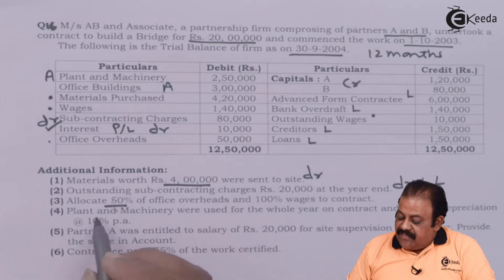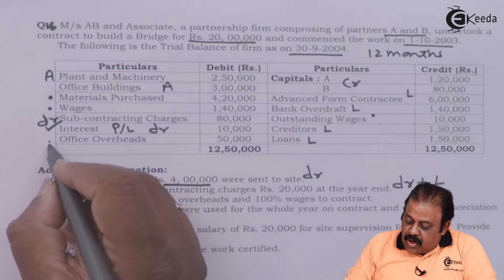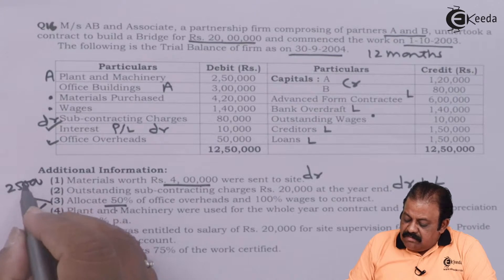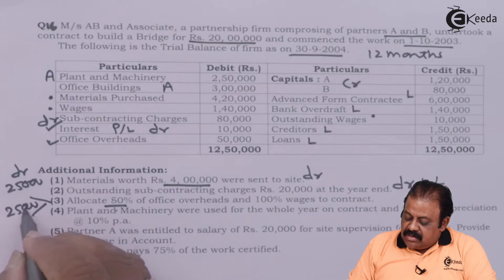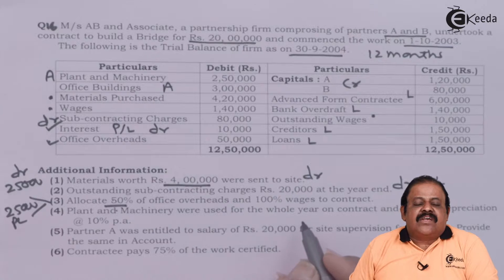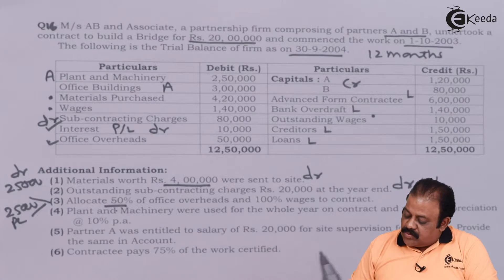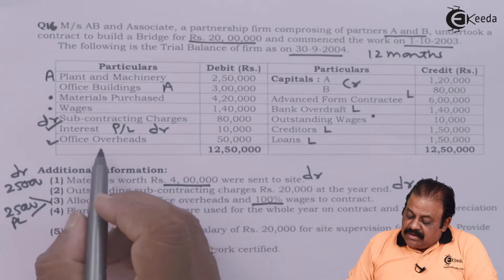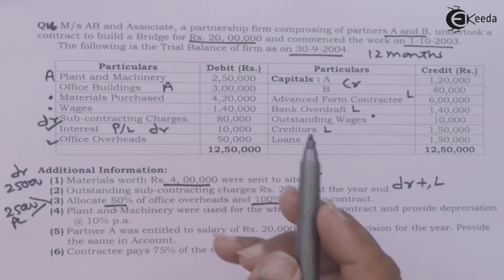Allocate 50 percent of office overheads to the contract. Office overheads are 50,000, so 25,000 will be debited to the contract account and the balance 25,000 will go to the profit and loss account. The amount of office overheads not allocated to the contract will be directly debited to profit and loss. 100 percent of wages are allocated to the contract, so the wages amount of 1,40,000 will be entirely debited to the contract account.